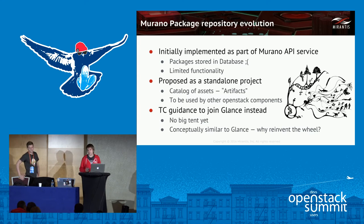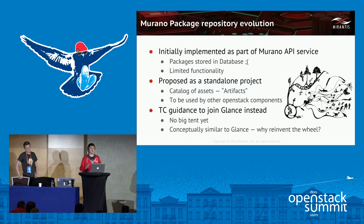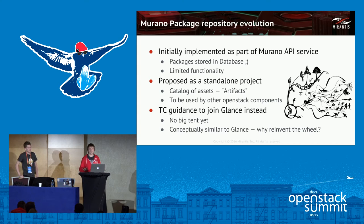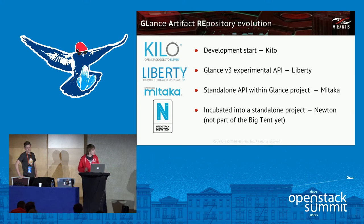We got a counter-proposal from the technical committee. This was a pre-BigTent era, and there could be no competing projects in the OpenStack ecosystem. The technical committee said that since there was already an OpenStack project acting as a catalog of assets — Glance — instead of spinning up a new project, we should join the Glance team and enhance Glance with ability to catalog not just VM images but other asset types as well.